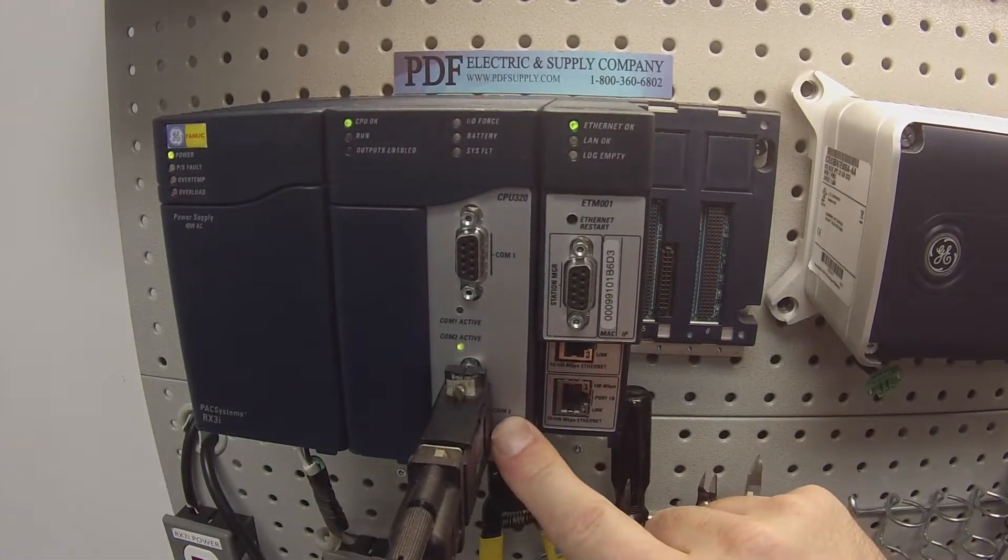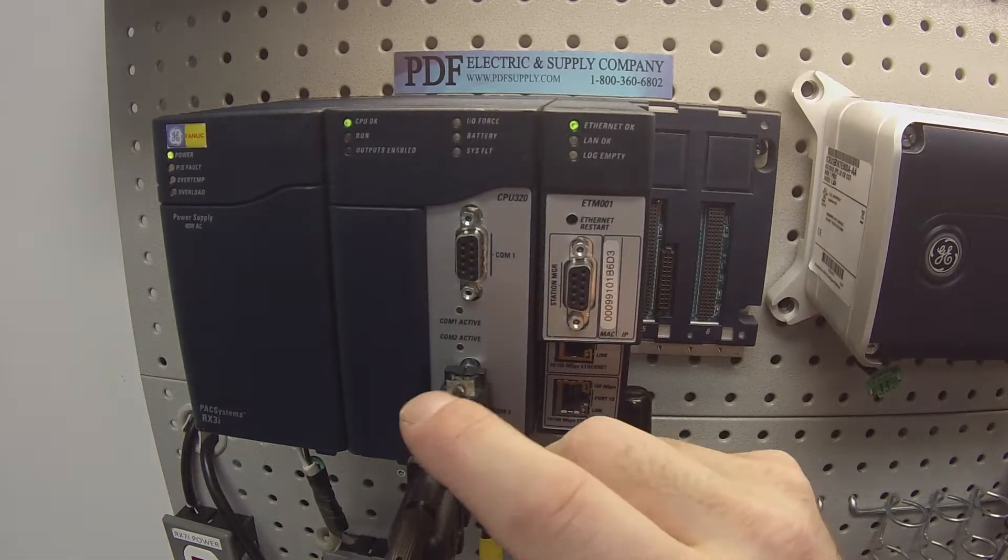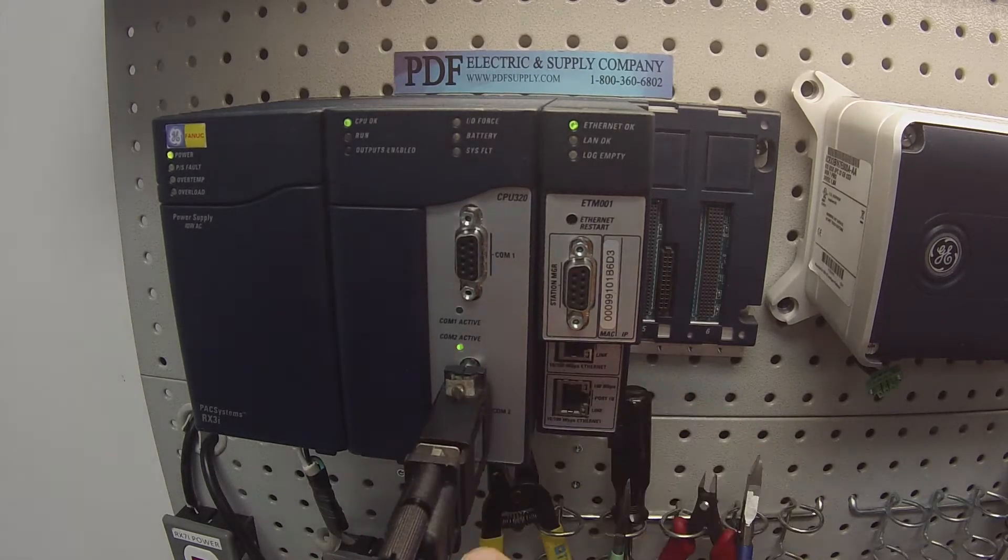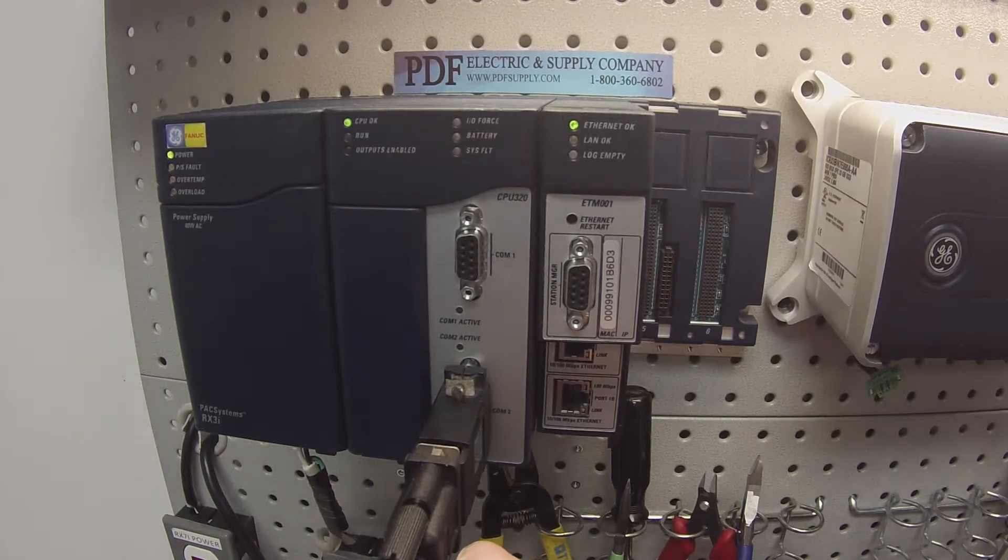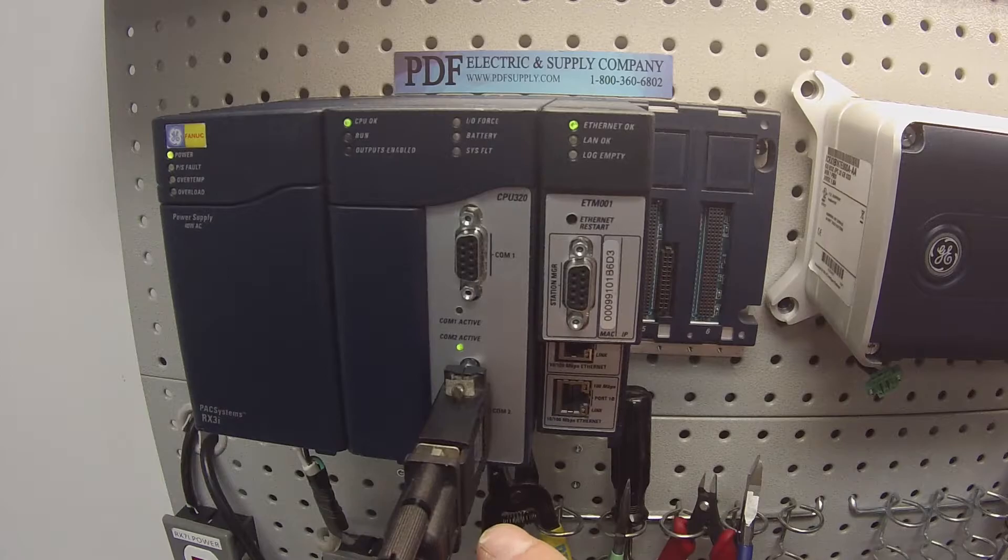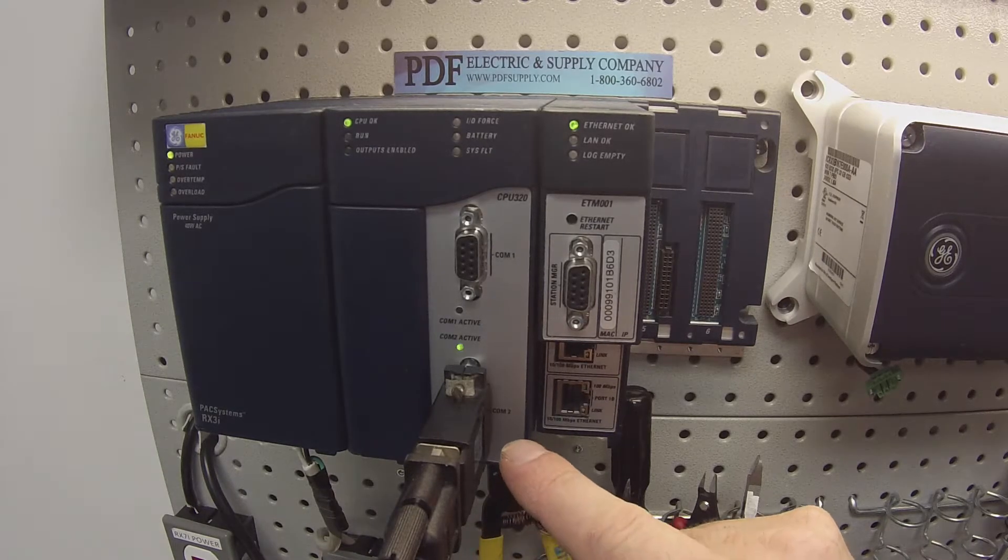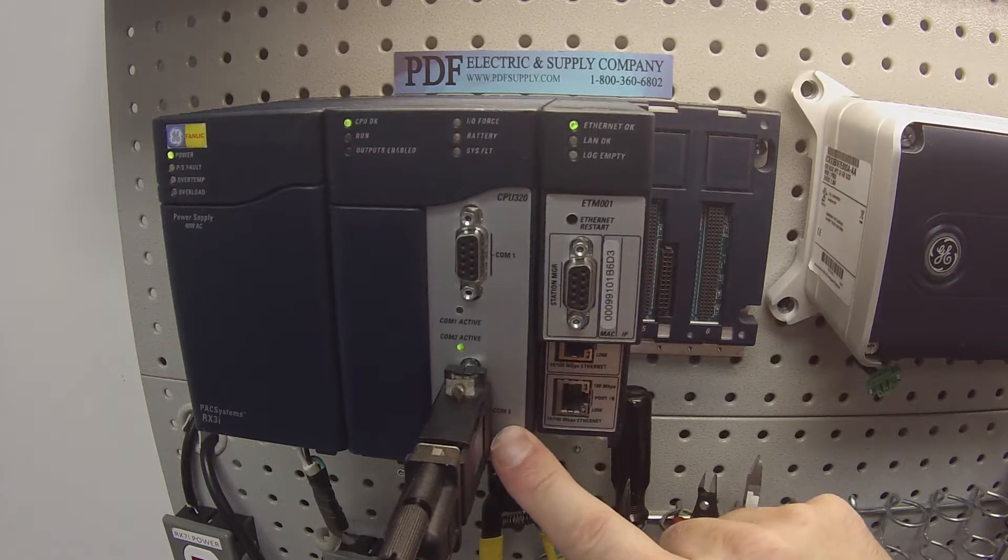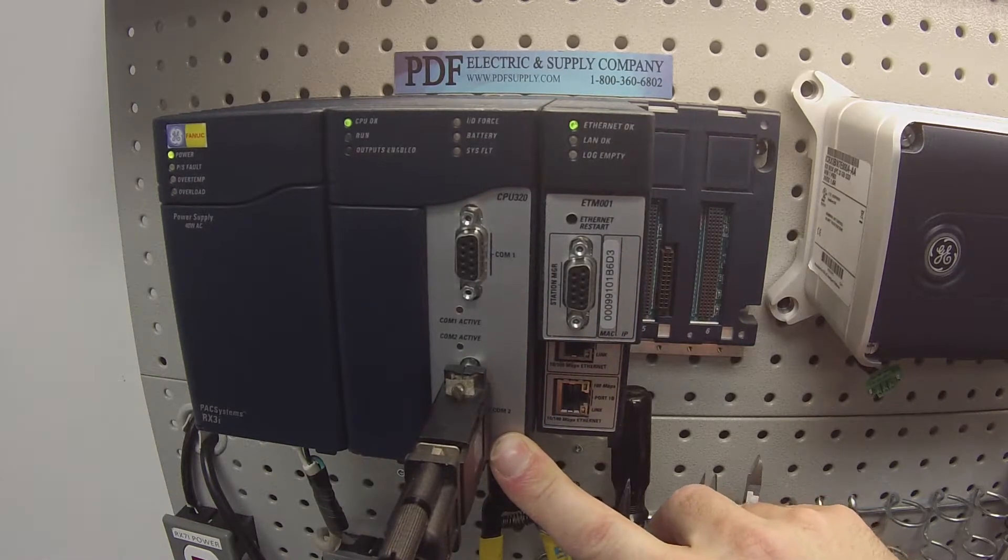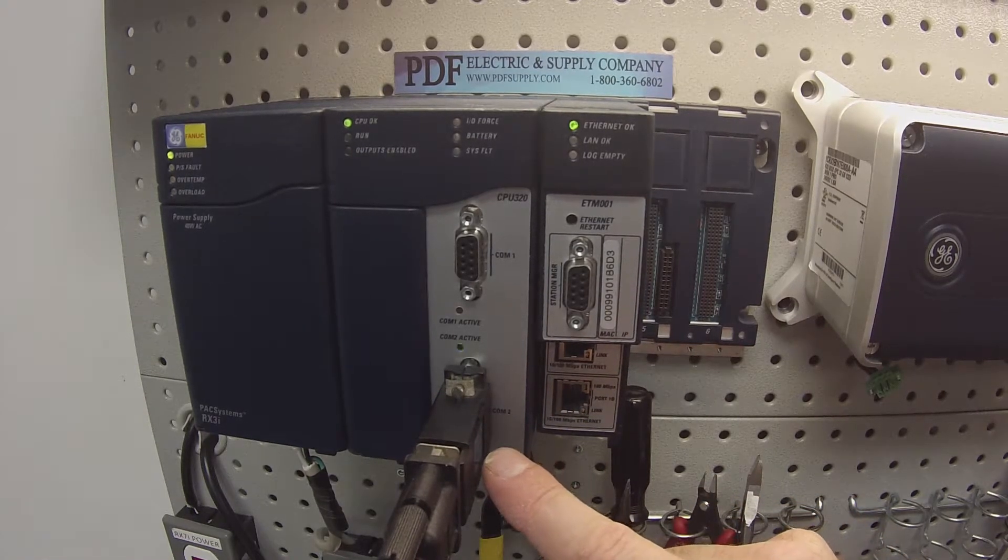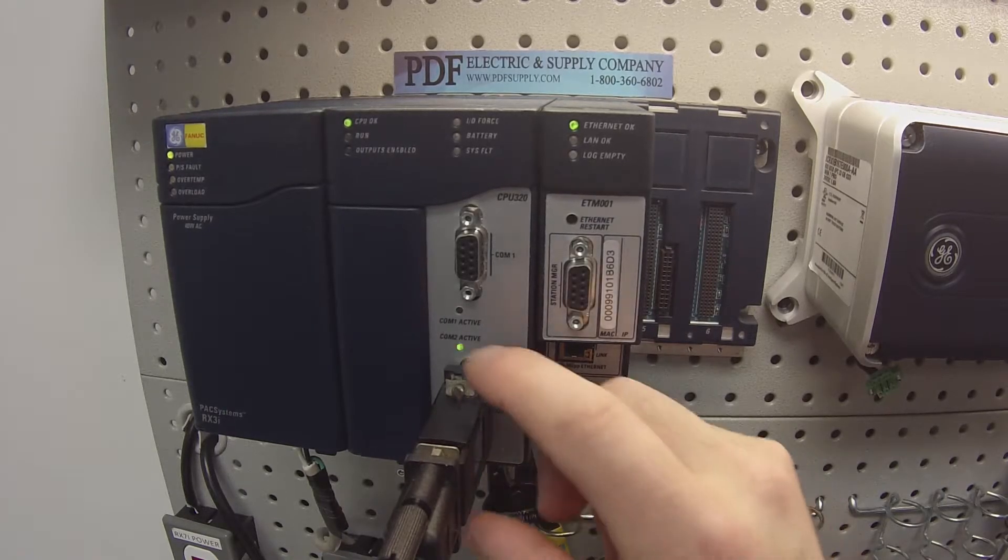As this build is in progress, I also want to explain I'm using COM port number two. I'm using an HE693CBL232 cable which is attached to the computer through the serial nine pin serial port and it's being adapted to the 15 pin port on my CPU 320 using an HE693SNP232.